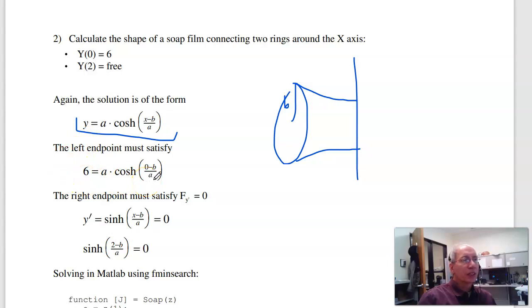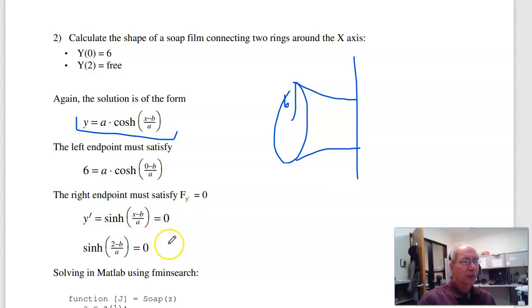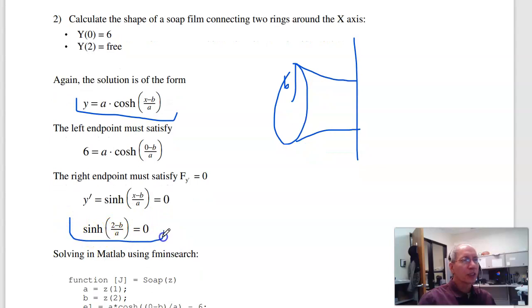The second equation, since it's free, is f_y' must be zero, which works out to y' = 0, which works out to the derivative of cosh is sinh, sinh at the right endpoint is zero. So there's my two equations. Here's the second one, here's the first equation, solve.